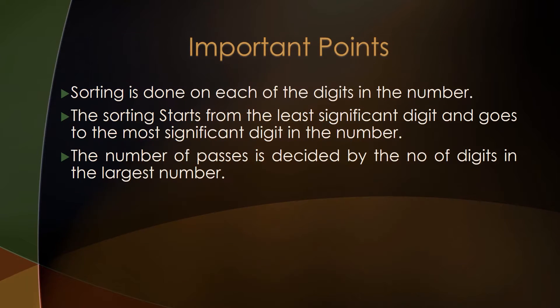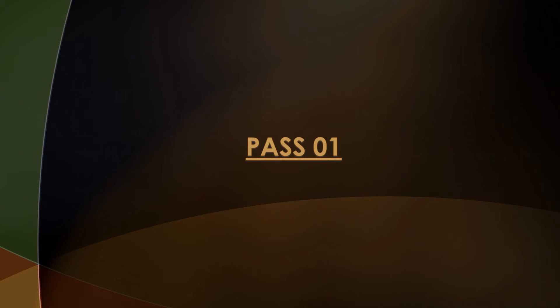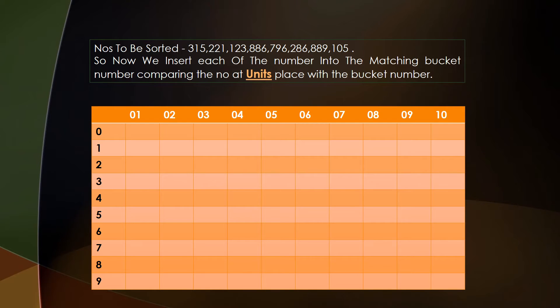There are a few important points to remember before we start the actual sorting process. Sorting is done on each digit in the number. The sorting starts from the least significant digit and goes to the most significant digit. The number of passes is decided by the number of digits in the largest number — for example, if the largest number has four digits, then there will be four passes.